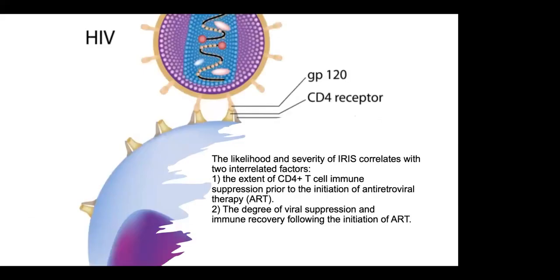The likelihood and severity of IRIS correlates with two factors: the extent of CD4 T cell immune suppression prior to the initiation of ARVs, and the degree of viral suppression and immune recovery after the initiation of ARVs.